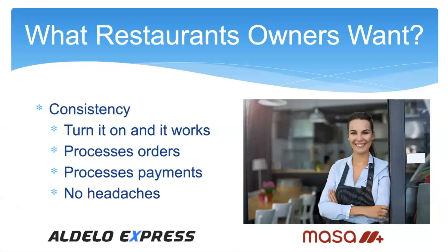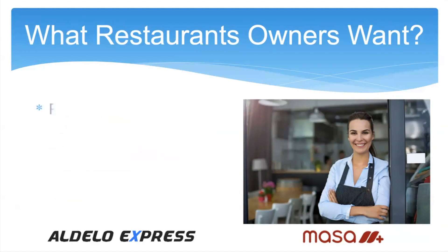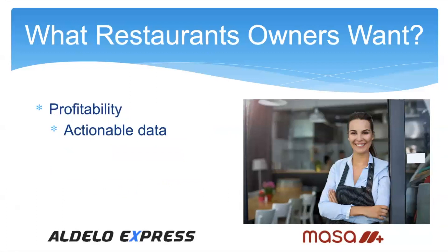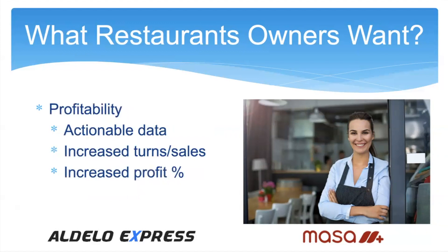Consistently — turn it on, it works, they don't have to worry about it. Profitability: they want actionable data. They want to trust it and make educated decisions about their business. They want to increase sales and profits, and ultimately increase their bottom line. That's what they need out of our system.